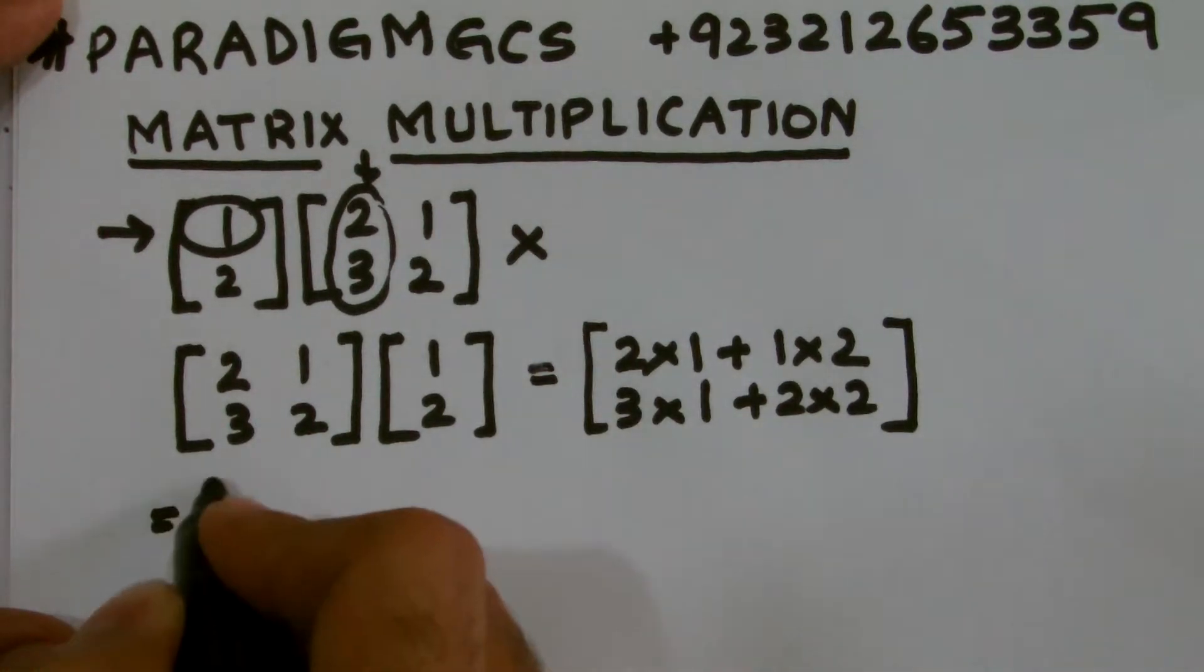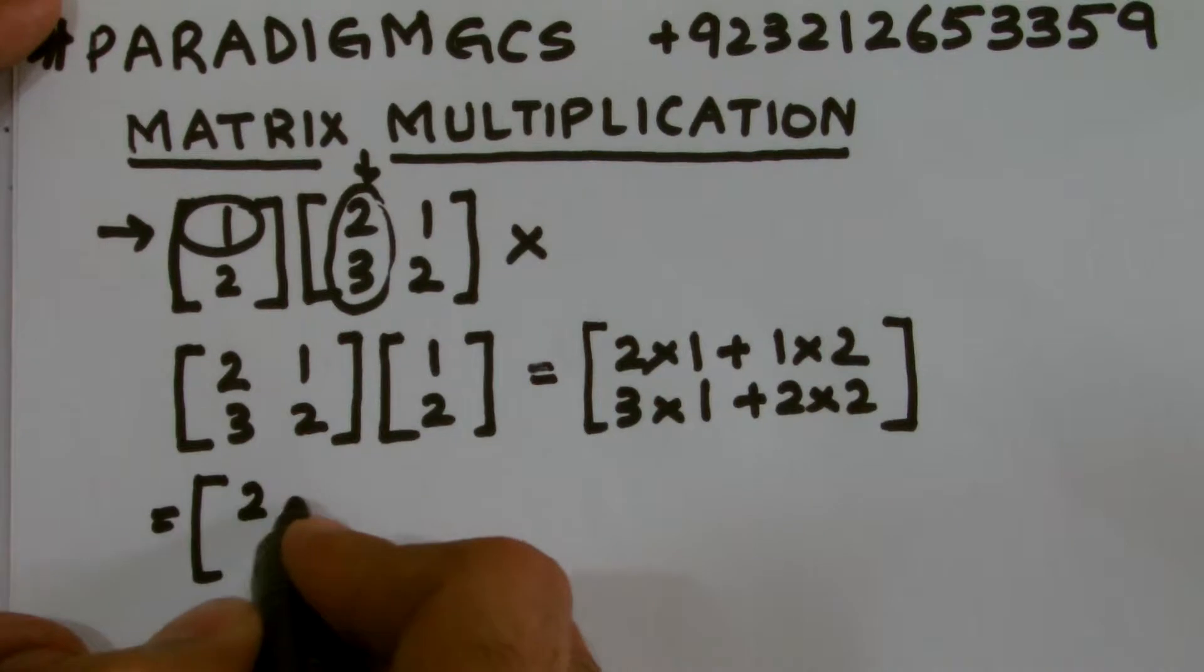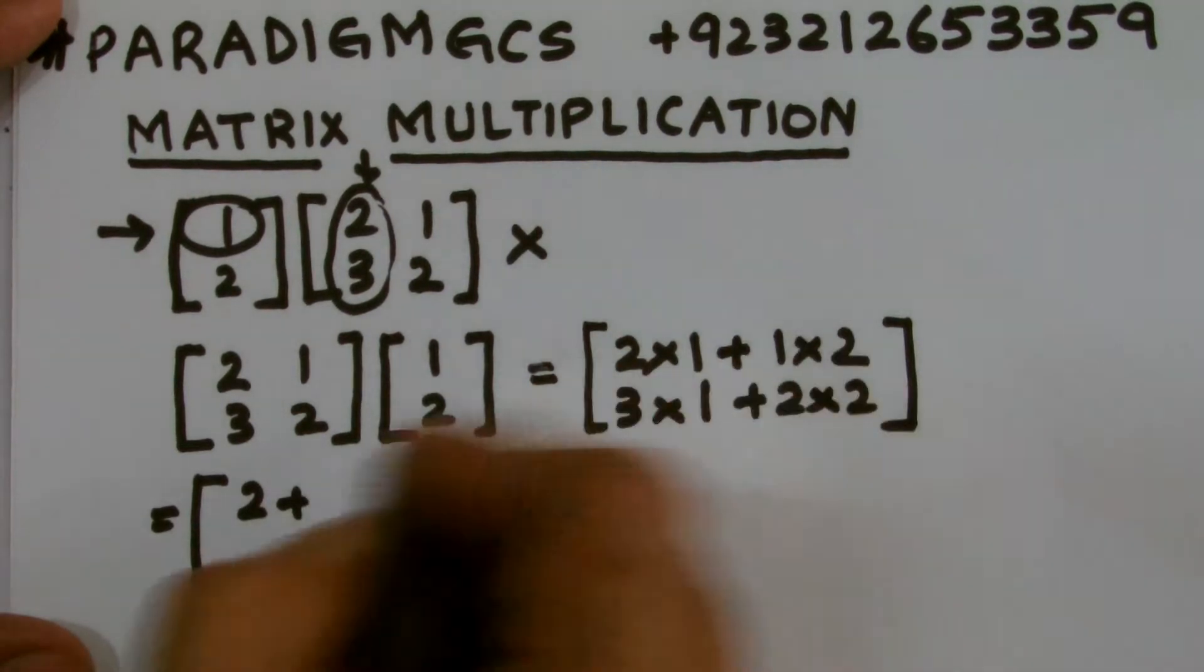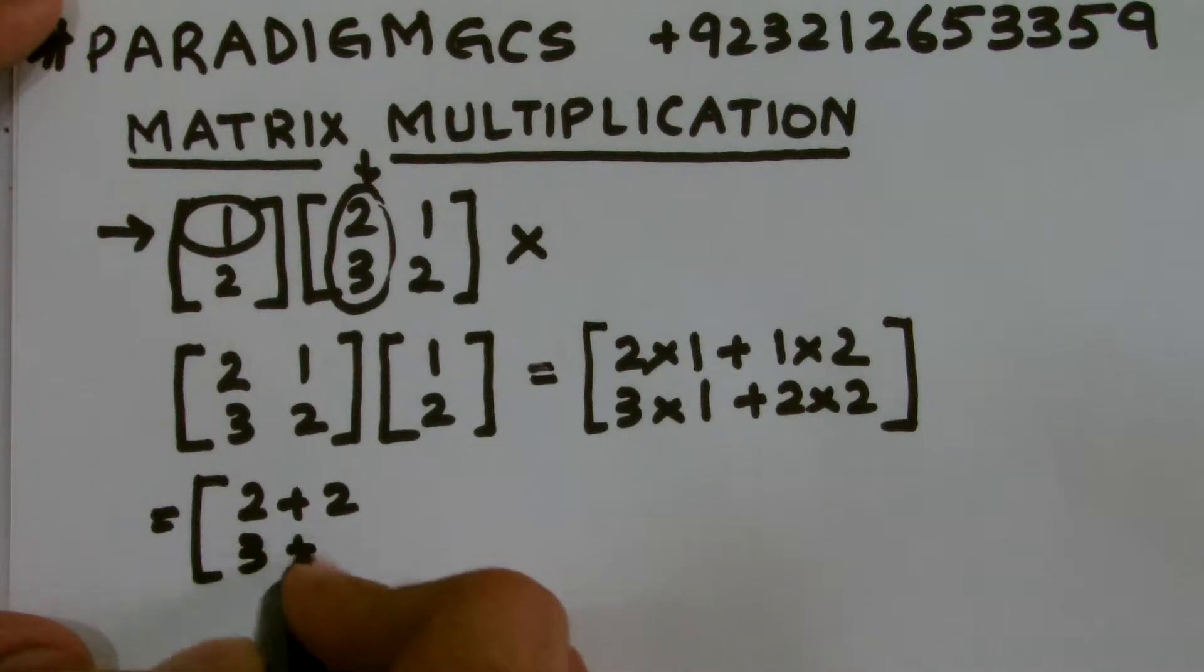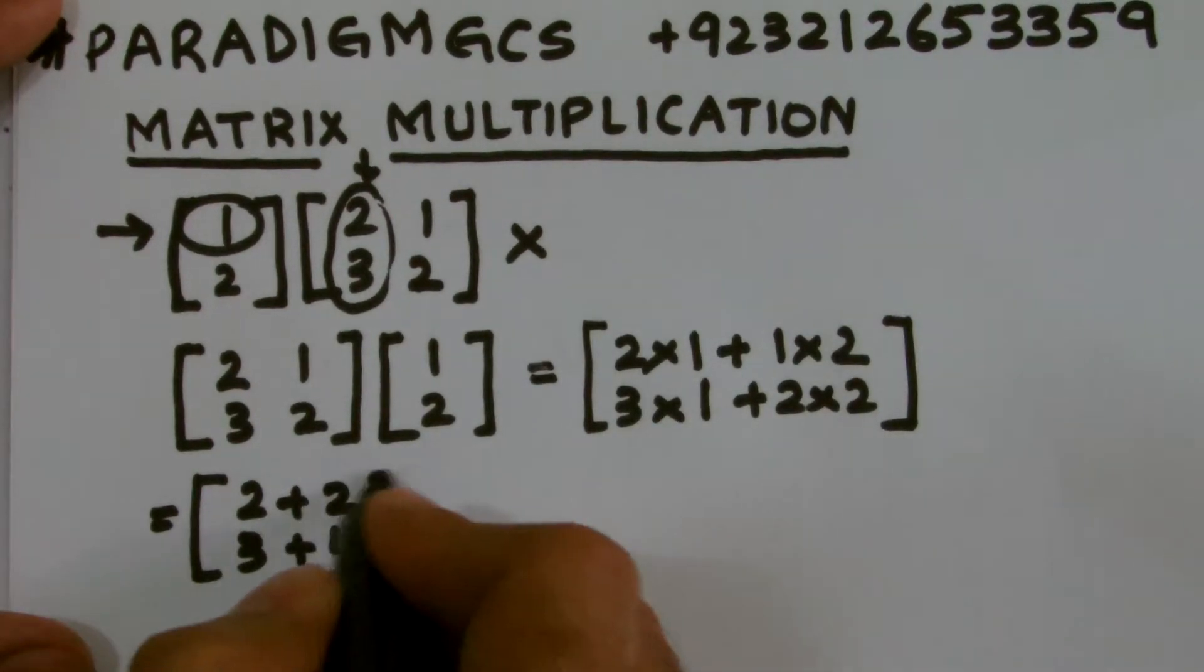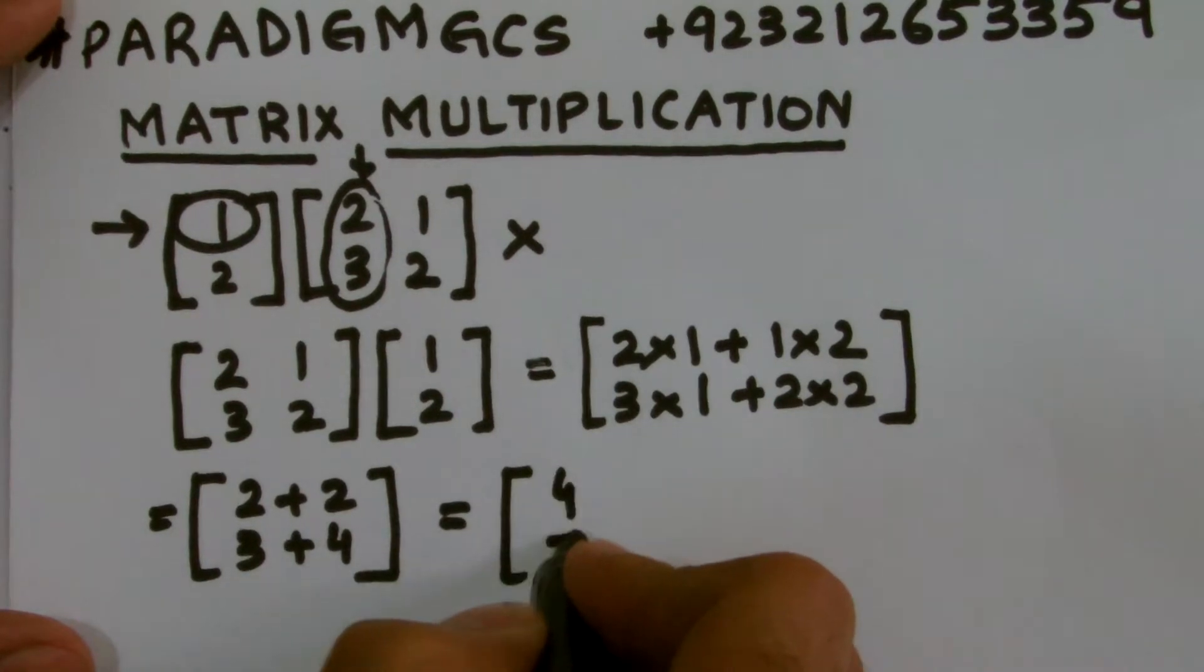So as a result, I get 2 into 1, I get 2, plus 1 into 2, I get 2 again, 3 into 1, I get 3, and 2 multiplied by 2, I get 4. So as a result, the answer is 4 and 7.